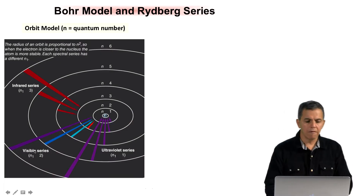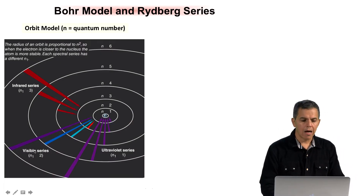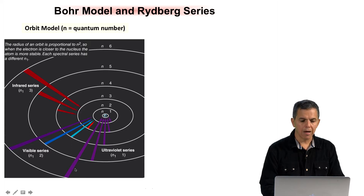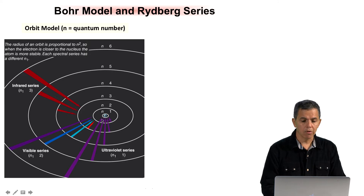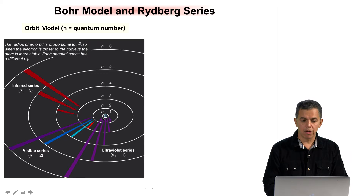Similarly, if we have an electron in a high orbit and there is a transition to a final orbit in which n equals 1, this will result in an emission of a photon that is in the visible range. As a third example, if we have an electron in a higher orbit and there is a transition to a final orbit in which n equals 1, this will result in an emission of a photon that is in the ultraviolet region.